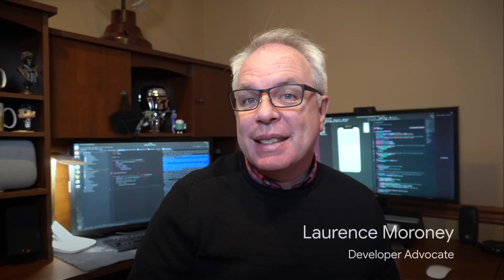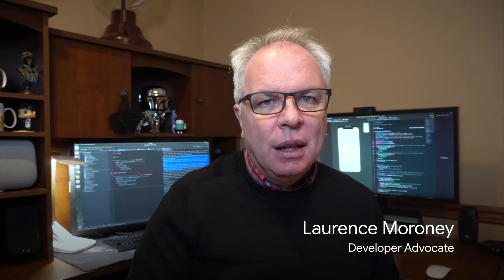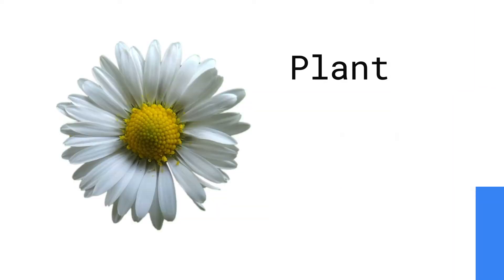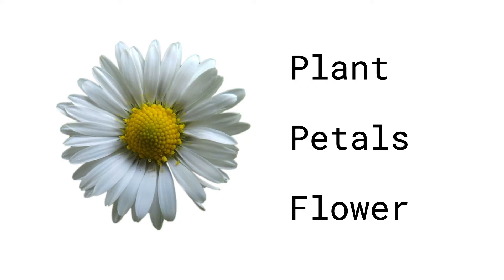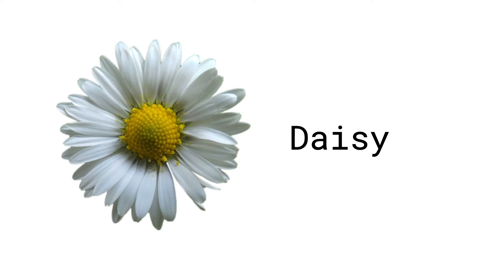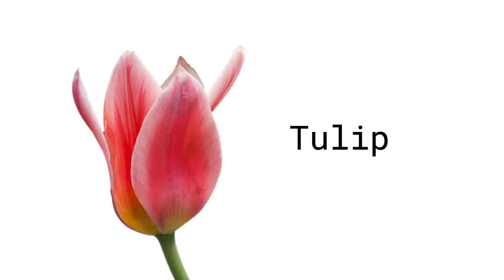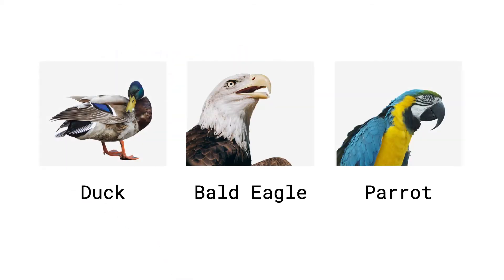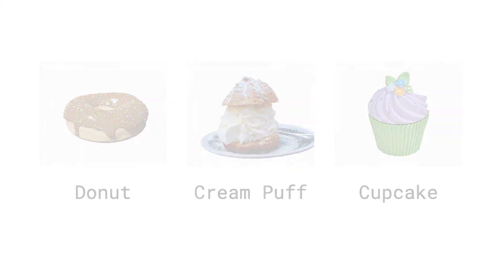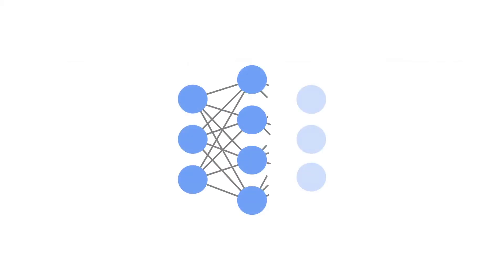You've built an image classifier app that recognizes the contents of an image using the generic model. It works really well, but you probably want to make it more specific. So instead of recognizing this image as a plant with petals, you want to go further and have it recognize it as a daisy, or a rose, or tulips. There may be similar scenarios — maybe to identify different types of bird or dessert or whatever. You're going to need your own model to do this.